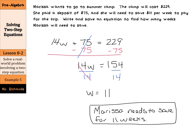At least I think. Let's make sure we check this. 14W plus 75 equals 229. $14 a week times 11 weeks plus 75 should equal 229. 154 plus 75 equals 229. And sure enough, 229 does equal 229.